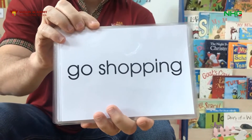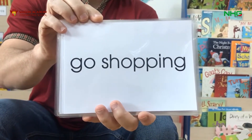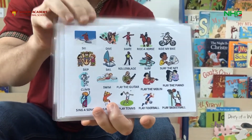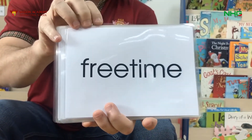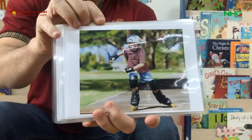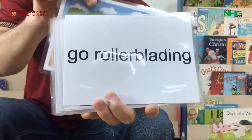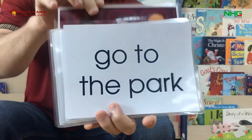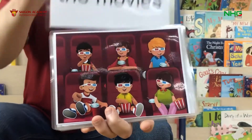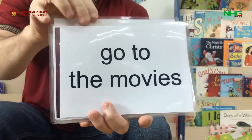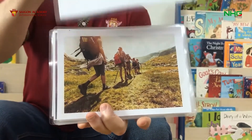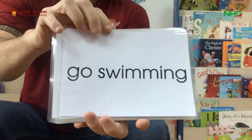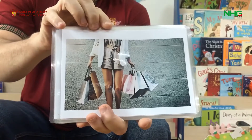Now we're going to do it one more time with a sentence. What do you do in your free time? I like to go rollerblading. I like to go to the park. I like to go to the movies. I like to go hiking. I like to go swimming.